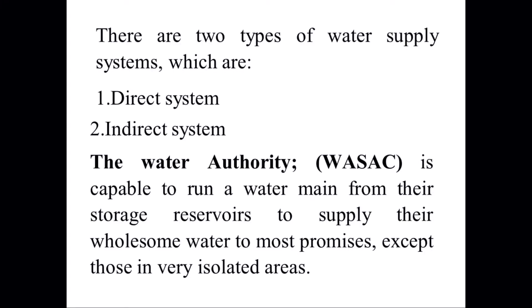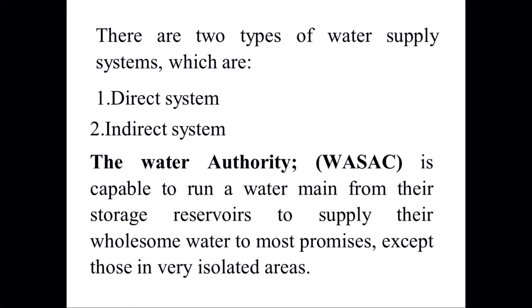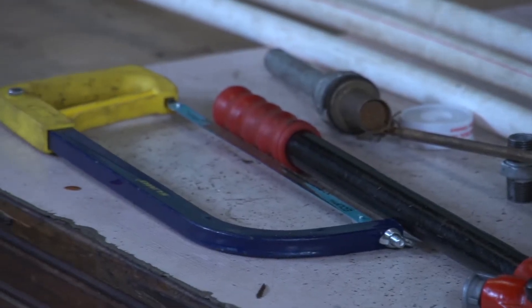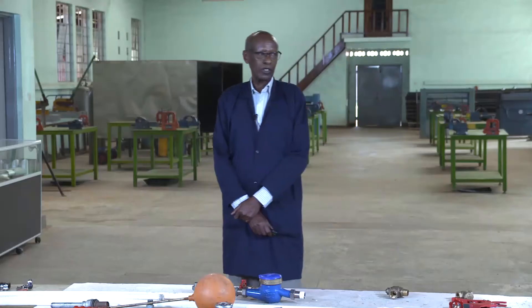There are two types of water supply system used in our country and around the world: the direct system and the indirect system. The water authority, which is WASAC in Rwanda, is capable of running a water main from storage reservoirs to supply water to most premises, except those in very isolated areas.